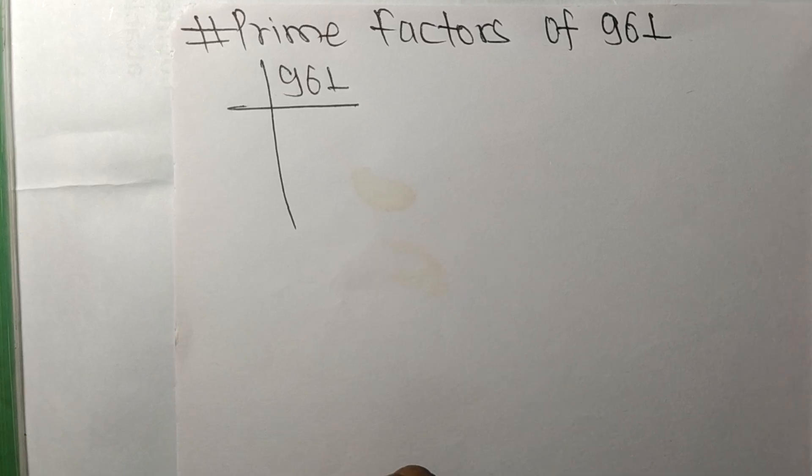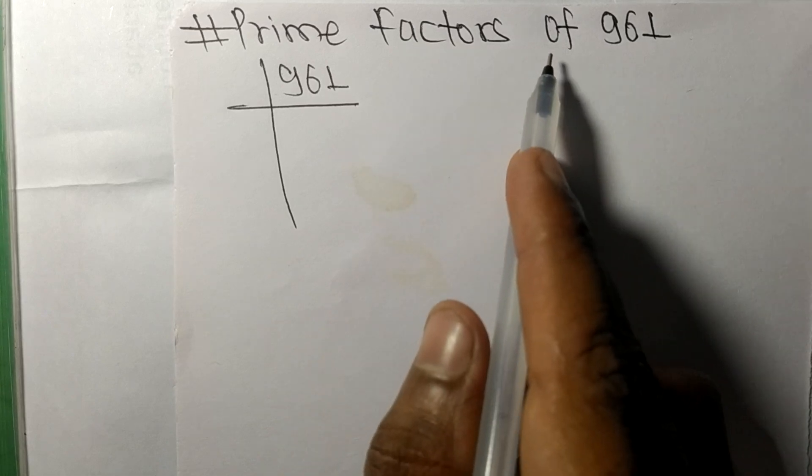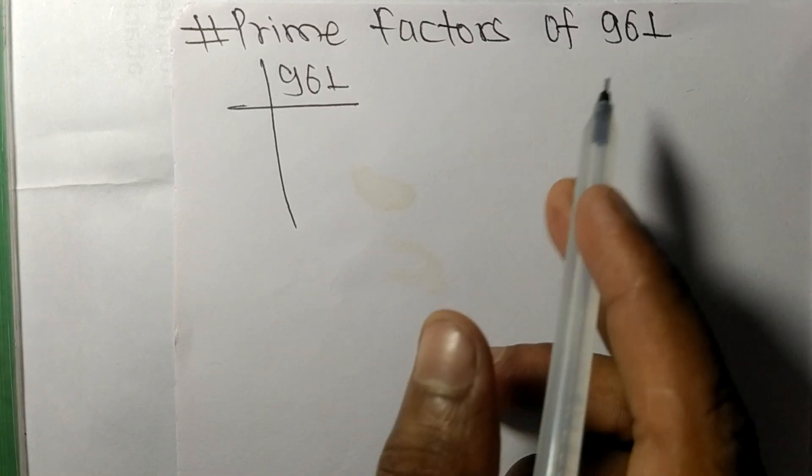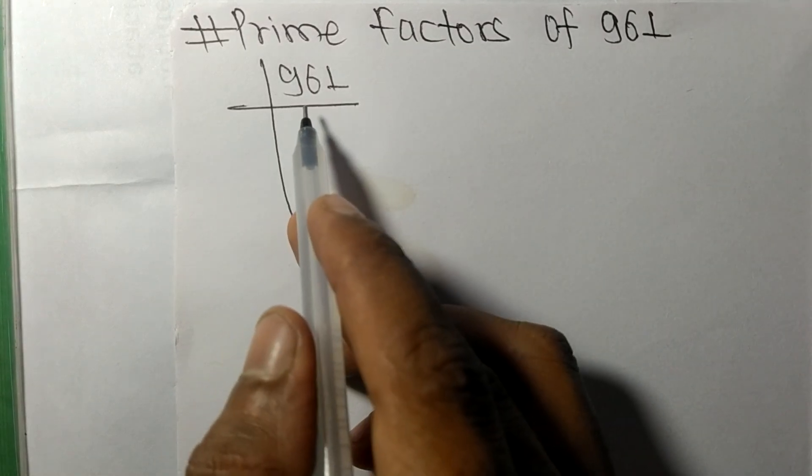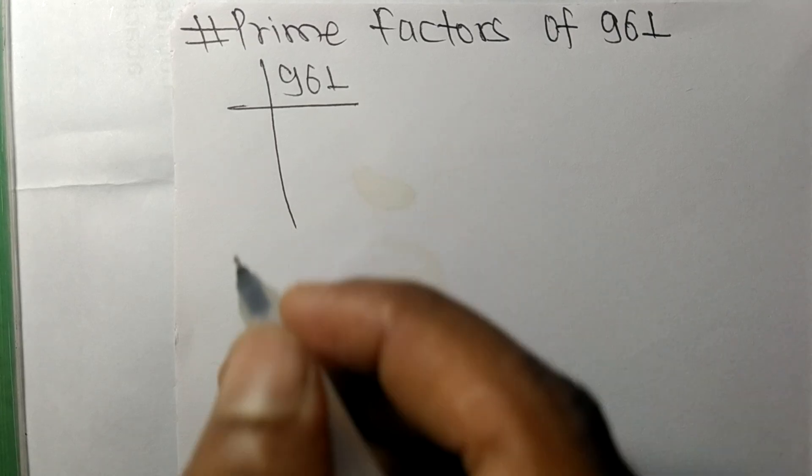So today in this video we shall learn to find the prime factors of 961. So 961 is exactly divisible by 31.